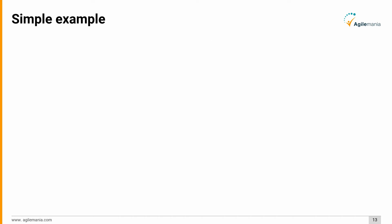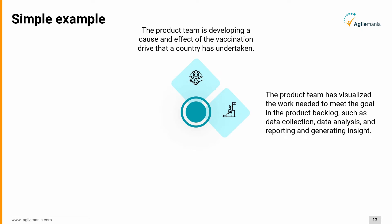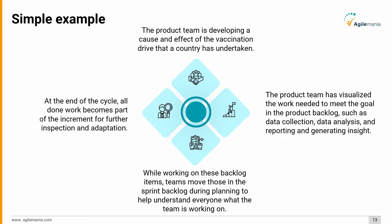To illustrate with a simple example: a product team is developing a cause-and-effect analysis of a vaccination drive a country has undertaken. The team has visualized the work needed in the product backlog, such as data collection, data analysis, reporting, and generating insights. While working on these backlog items, teams move them into the sprint backlog during planning so everyone understands what the team is working on. At the end of the cycle, all completed work becomes part of the increment for further inspection and adaptation.